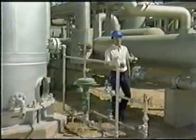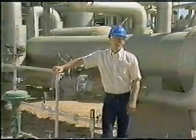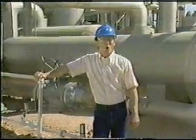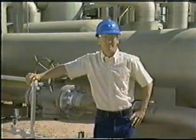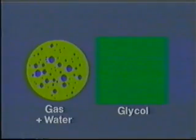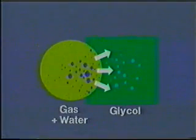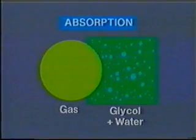Glycol is a very expensive chemical, so after it's used to remove the water from the natural gas, we recycle it to remove the water from it and then use it over again and again. Just as a sponge soaks up water, glycol is used to absorb water from natural gas. When gas containing water and glycol are mixed together, the water is absorbed by the glycol, thereby removing it from the natural gas. This process is referred to as absorption.